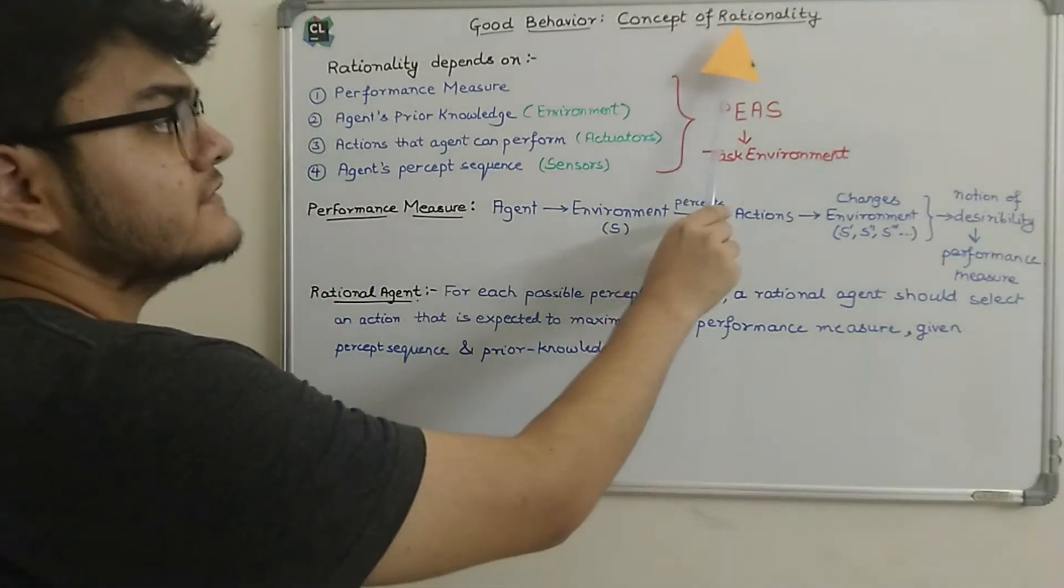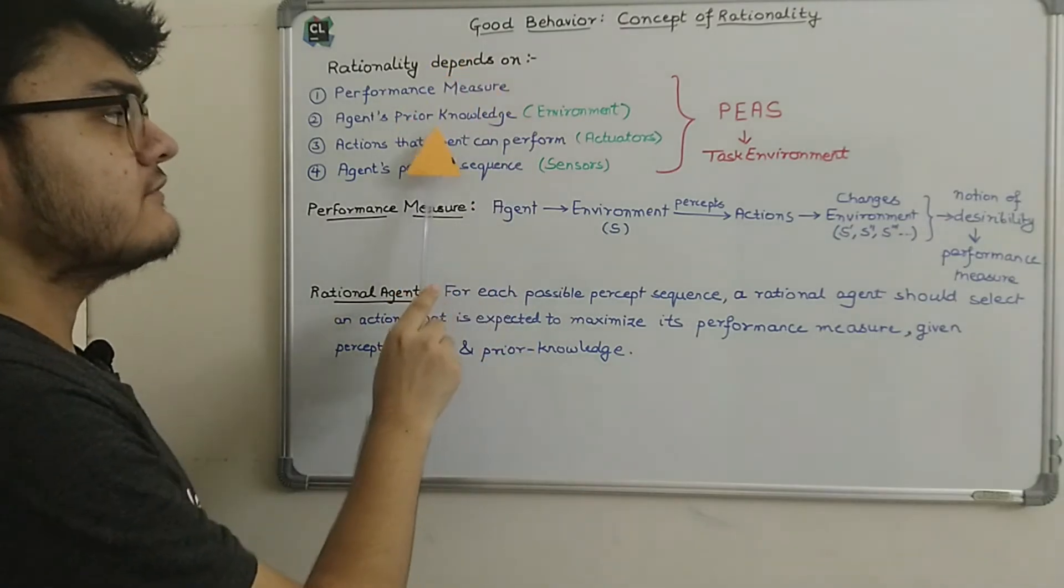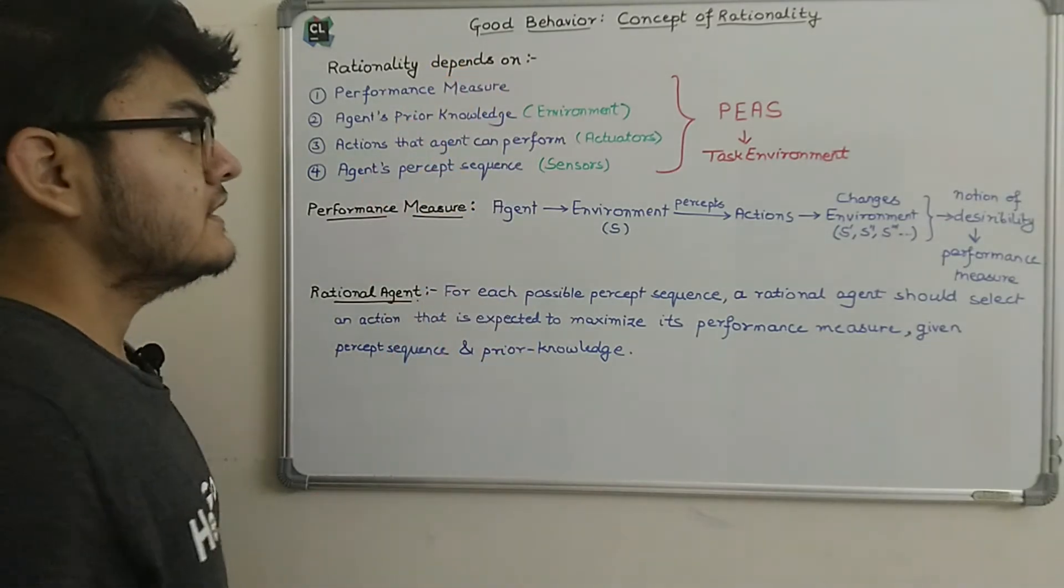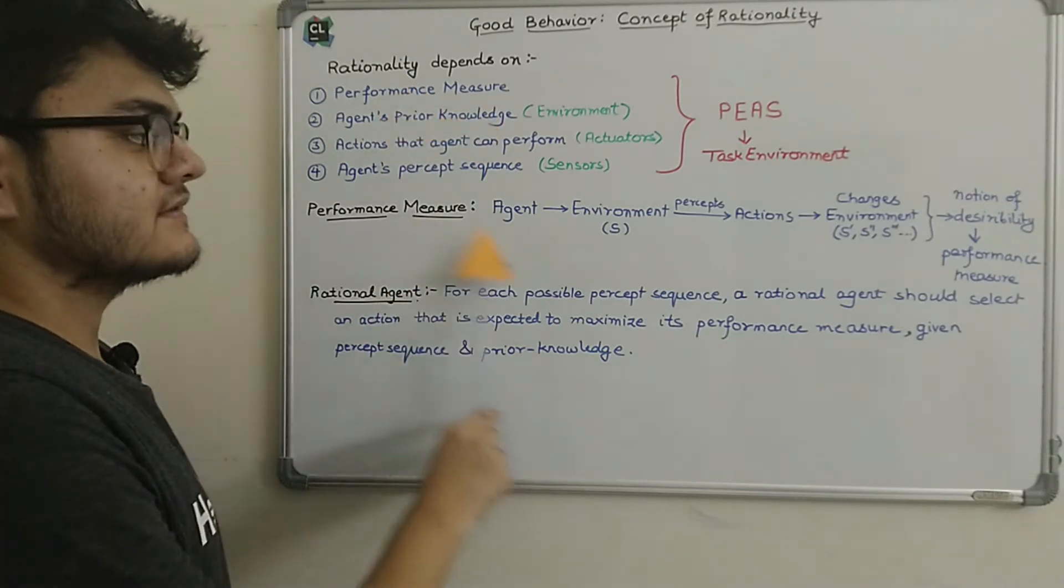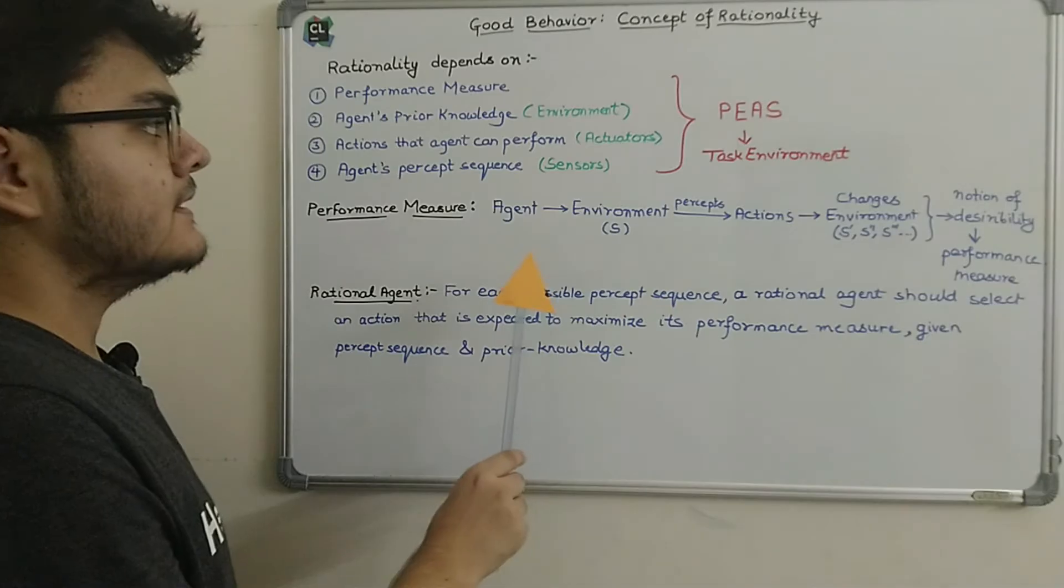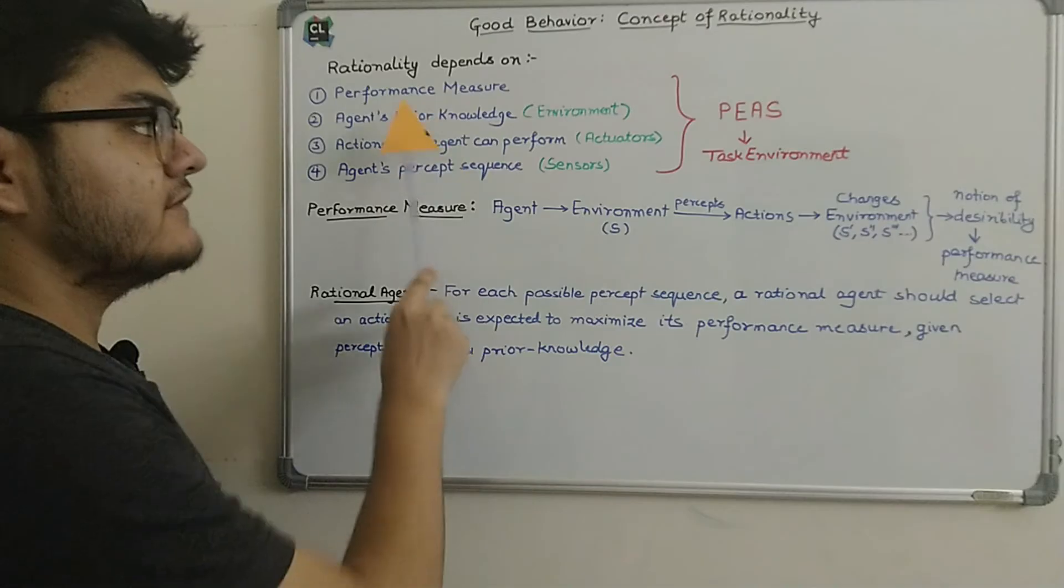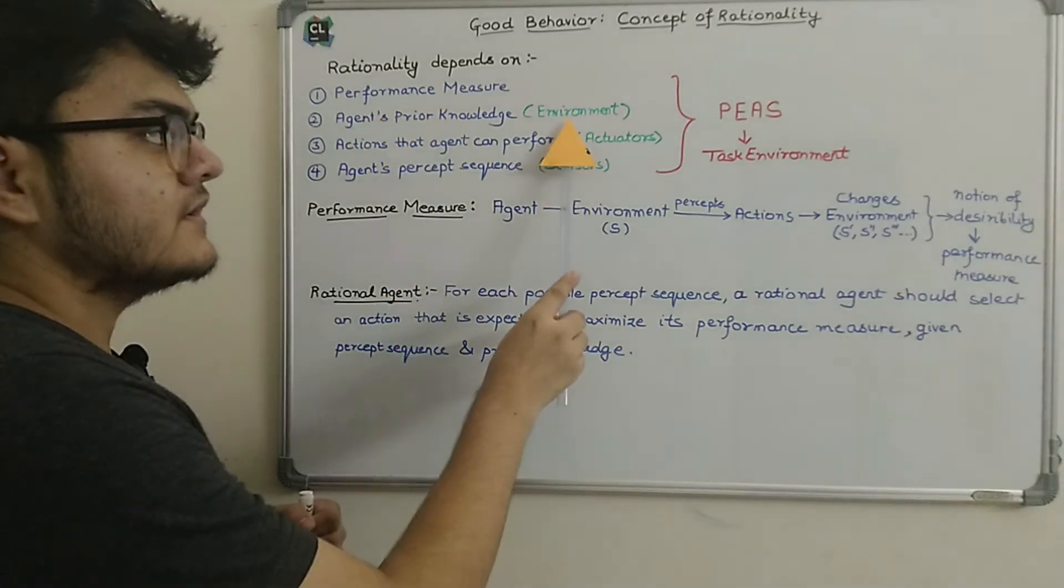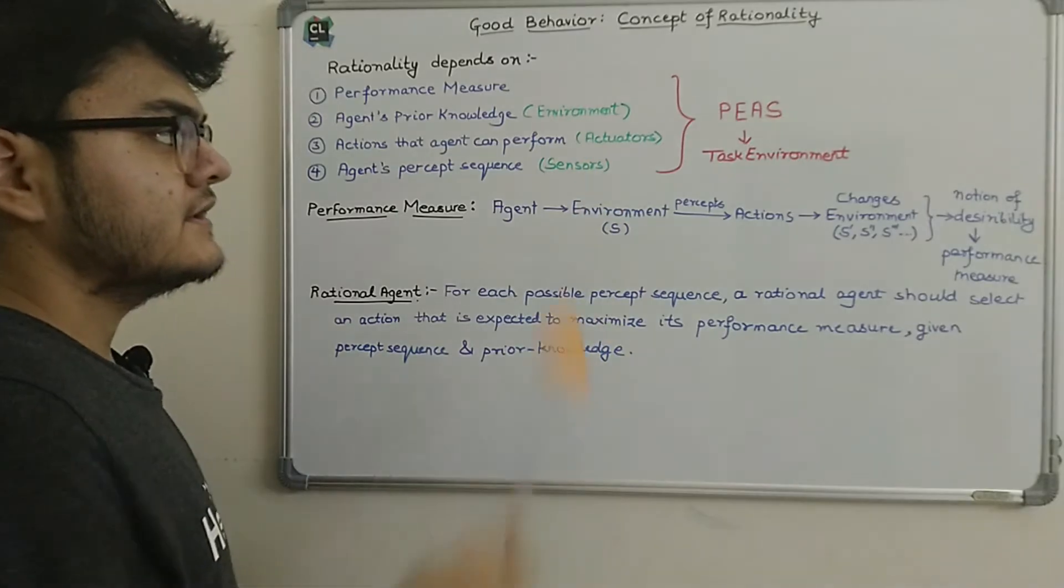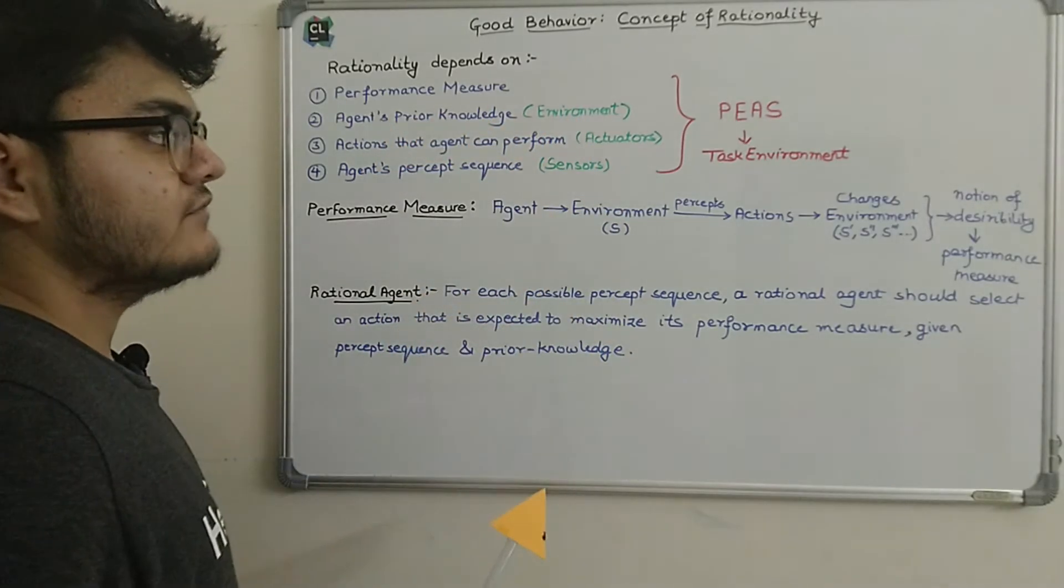So first of all, the concept of rationality depends on these four measures. The first one is the performance measure, which we will discuss in brief here. The second one is the agent's prior knowledge, and we know that agent gathers the knowledge from the environment.